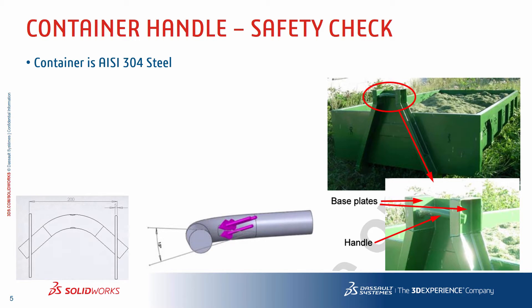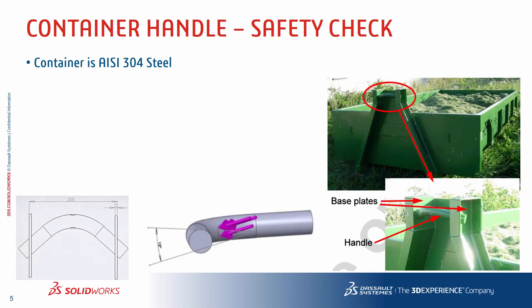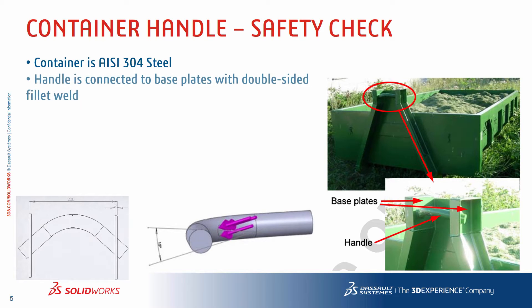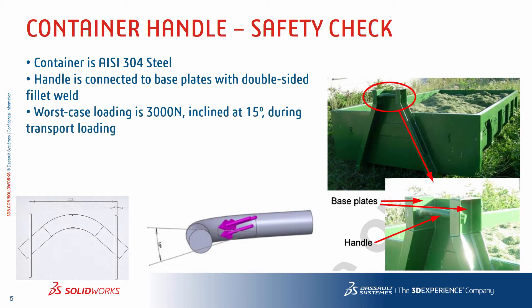Let's get into our first example in SOLIDWORKS and see just how those assumptions change the results. It's an example from the simulation training book — a garbage container where we're testing the mounting lug or hauling lug, which is basically just a bent piece of bar. We want to understand the factor of safety on this and of course test for it. The two mounting plates are visible on the bottom left. Everything's made out of 304 steel, welded with double-sided fillet welds, and the worst-case loading is 3000 newtons inclined at 15 degrees. This is all about understanding how the fixtures and connectors can influence the results.